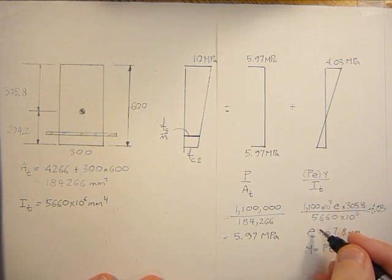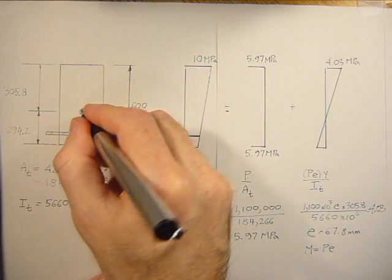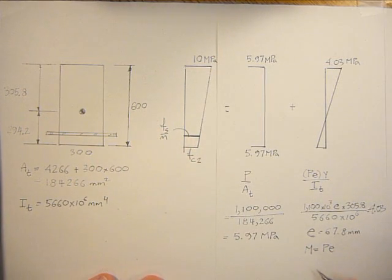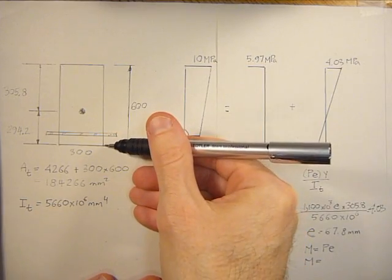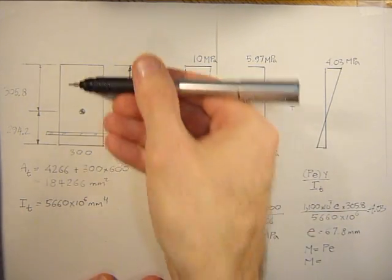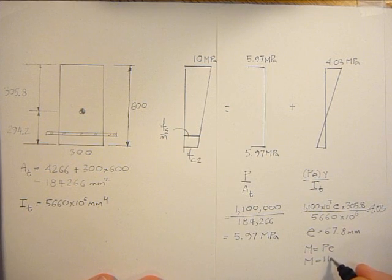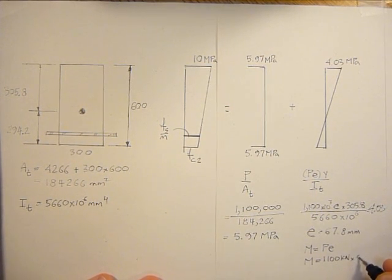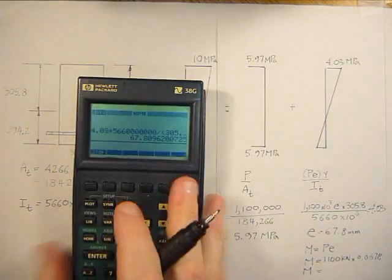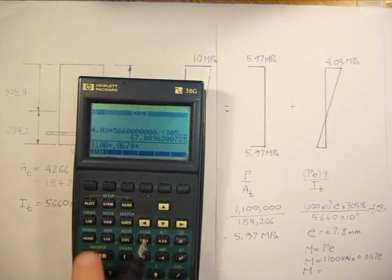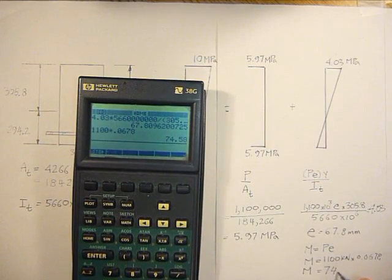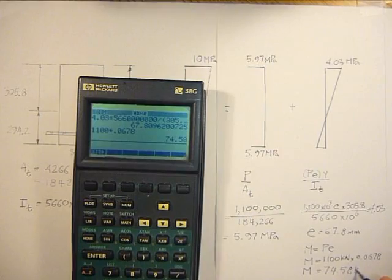And this E is actually really the E prime, because we're taking moments about the uncracked section. So it's a very fast, direct, straightforward way of calculating points on this P over M diagram. For cases only when the neutral axis is below the section. The force method is actually faster when you're in this range. So the P value is 1100 kilonewtons times 0.0678, that's the E. So the moment is equal to 74.58 kilonewton meters.